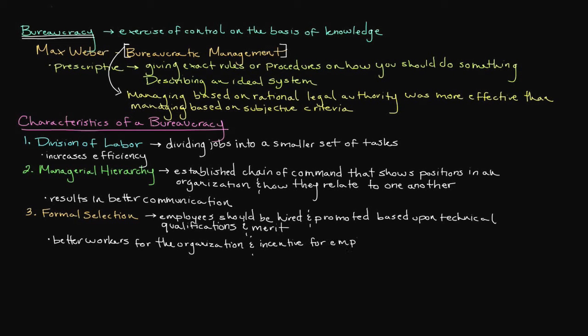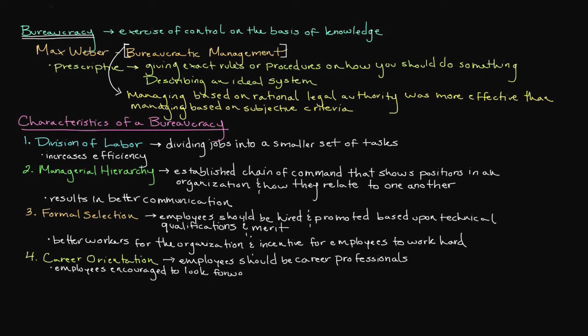The fourth characteristic of a bureaucracy is career orientation. In order for the organization to run efficiently, Weber believed that employees should be career professionals rather than politicians. This was to ensure that assigned duties were performed well regardless of outside pressures and also to ensure that operations ran smoothly even during elections. Employees were to be encouraged to look forward to a lifelong career with the organization and should be provided with some layer of protection from arbitrary termination by management.